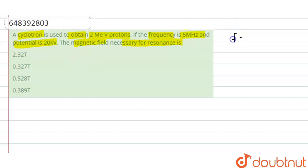The frequency of the protons is 5 megahertz, so we can write this as 5×10⁶ Hz. The potential is 20 kilovolt, so we can write this as 20×10³ V. We have to calculate the magnetic field required for resonance.